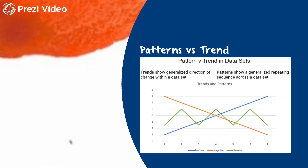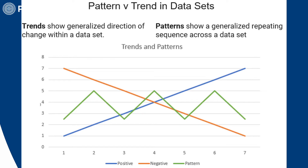Let's zoom in on what patterns and trends actually look like. Trends are generalized directions of change within a data set. A positive trend shows both variables increasing; a negative trend shows one increasing while the other decreases, shown in orange. A pattern, shown in green, is a generalized repeating sequence across the data set. That's the picture-perfect version.